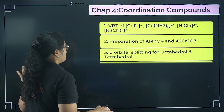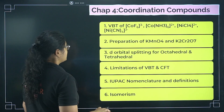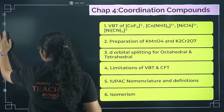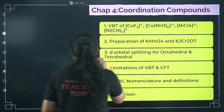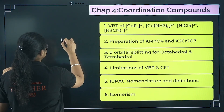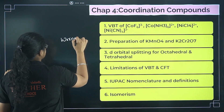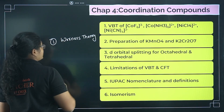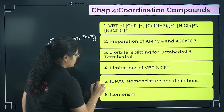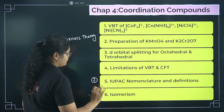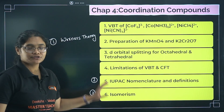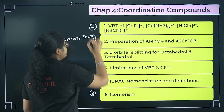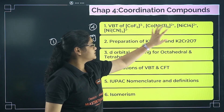Moving to the next chapter: Coordination Compounds. First, focus on Werner's theory — there are three postulates, prepare all of them. The second thing to focus on is nomenclature; at least one question will be asked. Isomerism will definitely have a question as well.